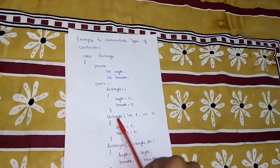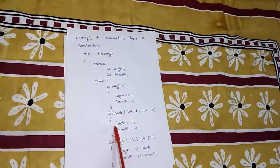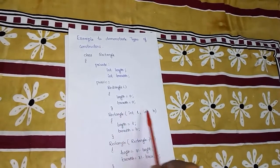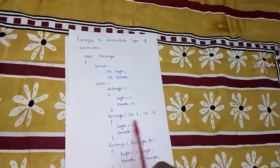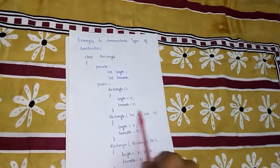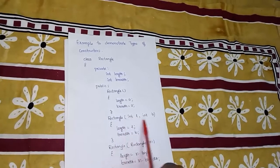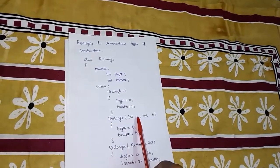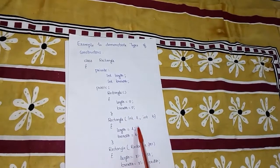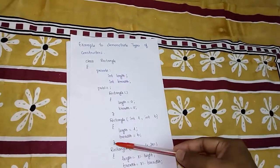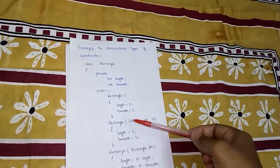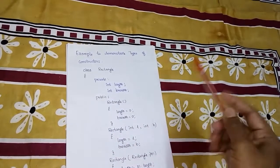The next function is also named 'rectangle', same as the class name, so it is also a constructor. We check its arguments — it has arguments, so this is a parameterized constructor. It has two parameters, L and B. We explicitly give values to L and B and assign those values to the data members: length equals L and breadth equals B. This is the parameterized constructor.